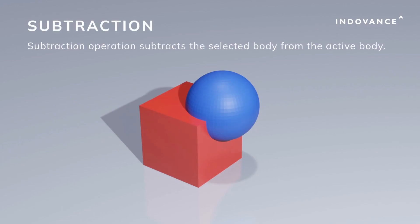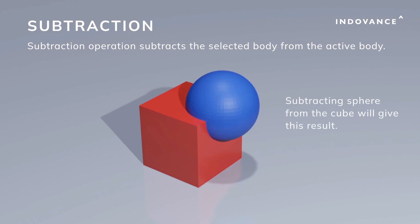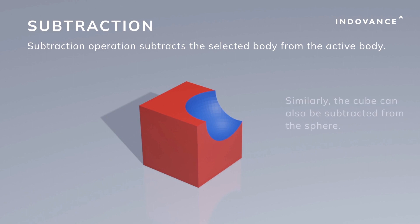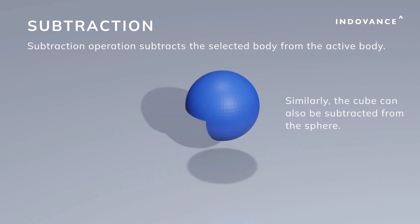Subtraction operation subtracts the selected body from the active body. Subtracting the sphere from the cube will give this result. Similarly, the cube can also be subtracted from the sphere.